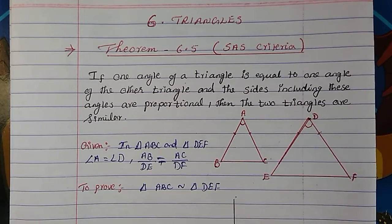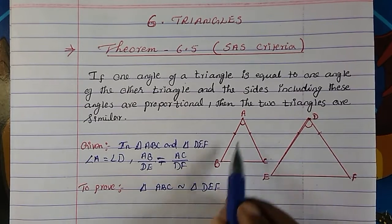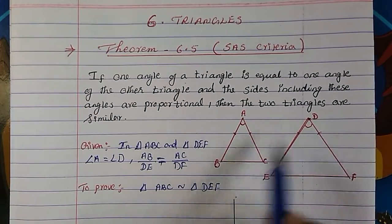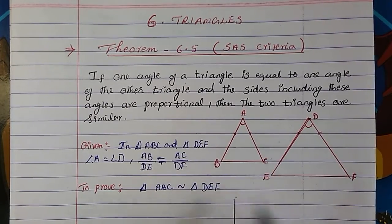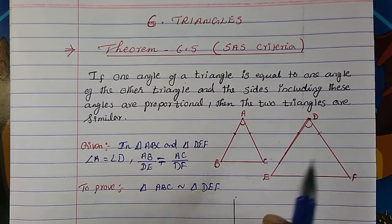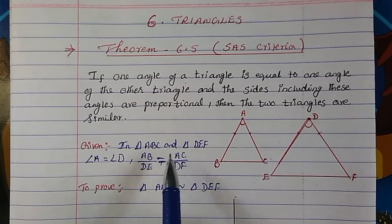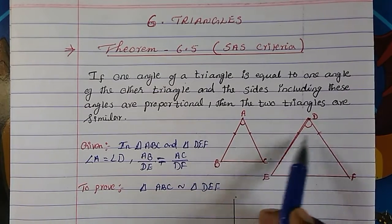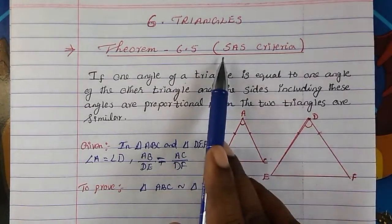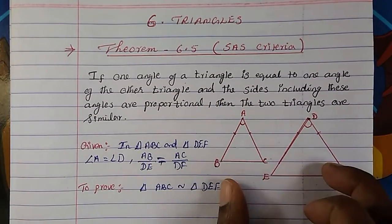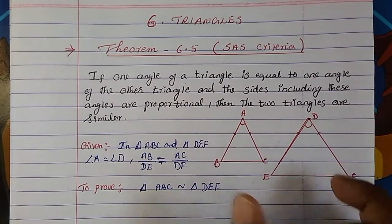The similarity condition requires all angles to be equal and the ratios of sides to be equal. But here, the minimum given to us is one angle and two sides — that's why it is called Side Angle Side. We have to prove that both triangles are similar.